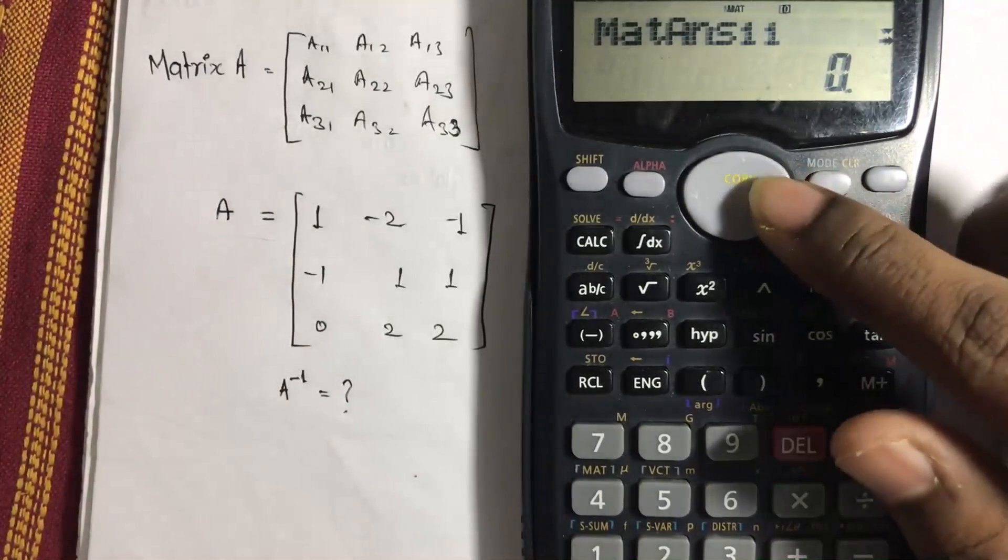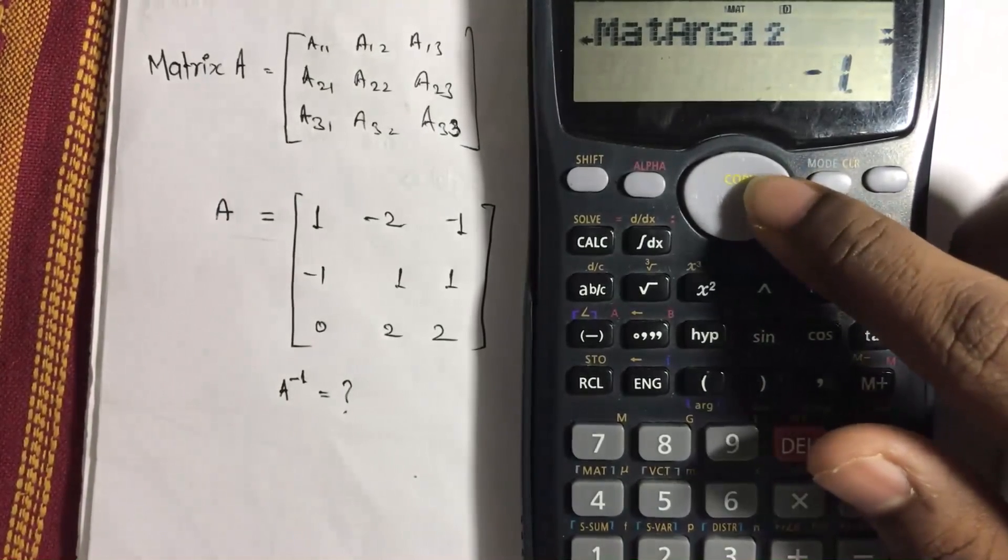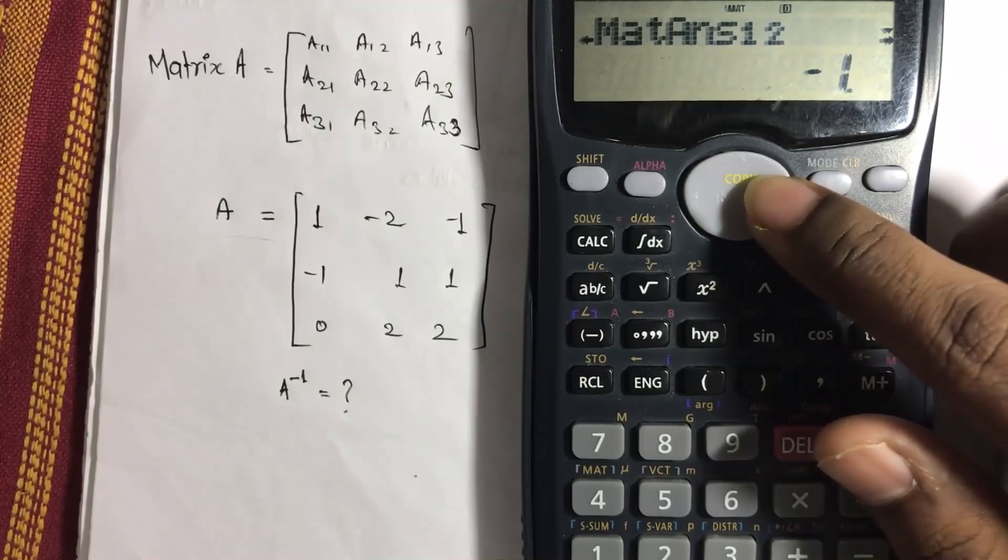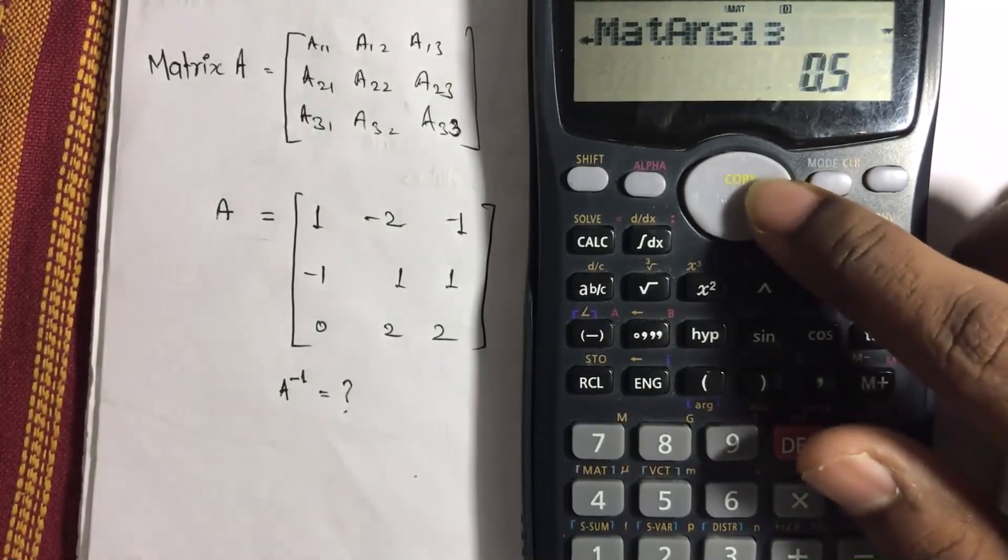Now here we are with our matrix inverse of matrix A. So here, each and every point, a11, a12 of A matrix inverse will be given over here, this minus 1, 0.5, and this way.